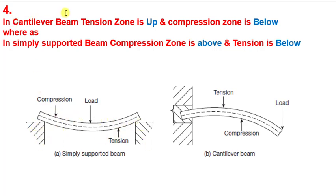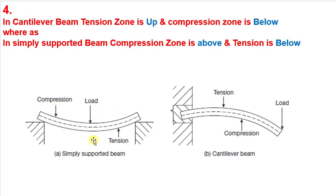In the case of a cantilever beam, the tension zone is at the top and the compression zone is at the bottom. For a simply supported beam, the compression is on the upper side and the tension is on the lower side of the beam.